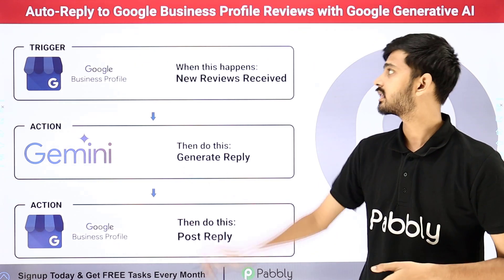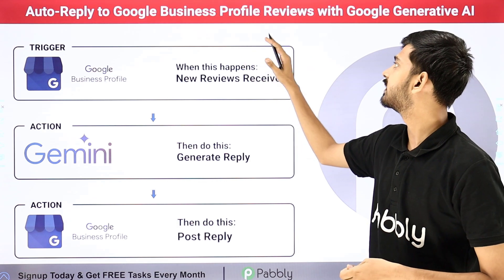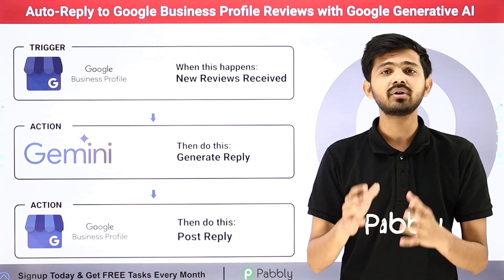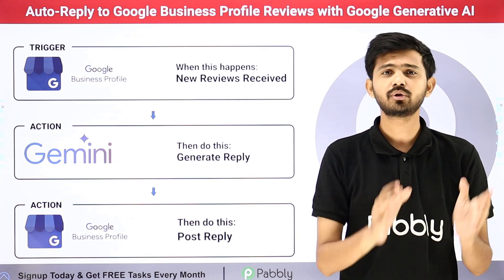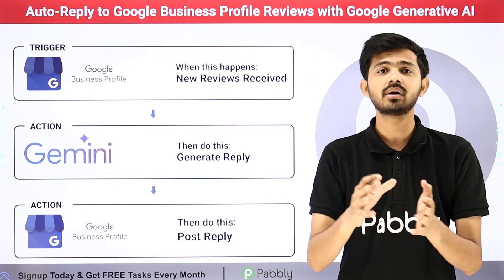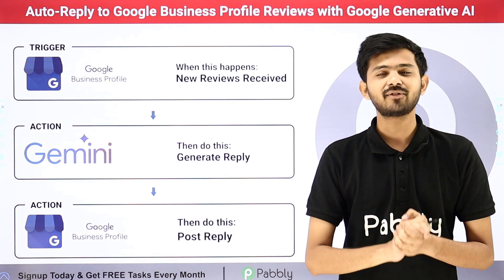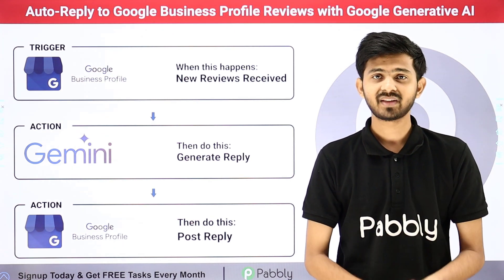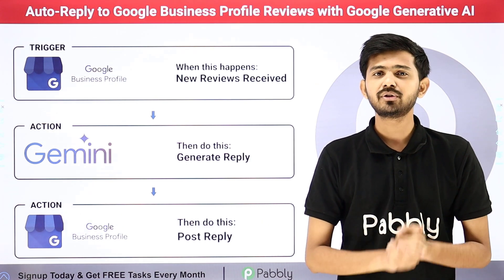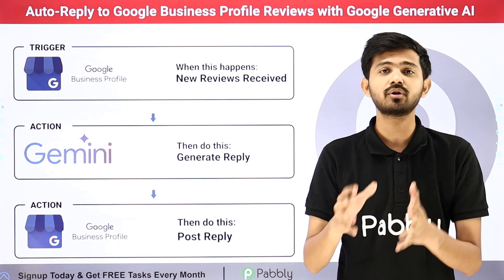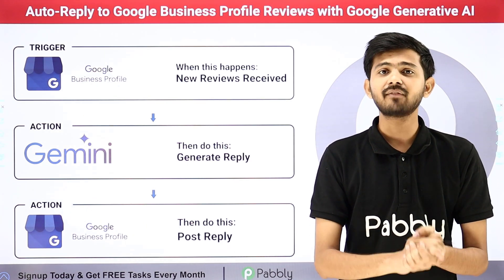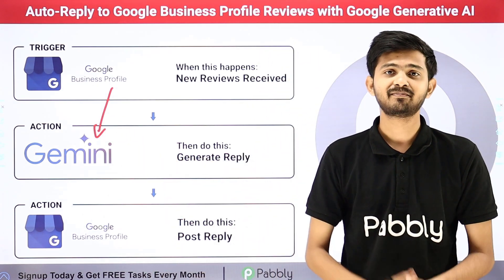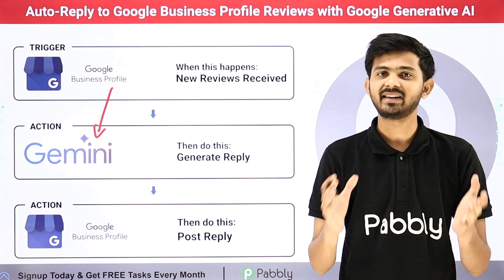Welcome back to Pabbly. Today our topic is how to auto-reply to Google Business Profile reviews with Google Generative AI. I want to keep the reputation of my business and automatically reply to all the reviews I'm getting on my Google Business Profile account. I'm going to generate the reply using Google Generative AI or Google Gemini, and then automatically post that on my Google Business Profile account. To build this connection between Google Business Profile and Google Gemini, I'm going to use Pabbly Connect.